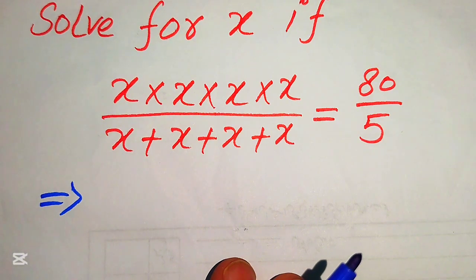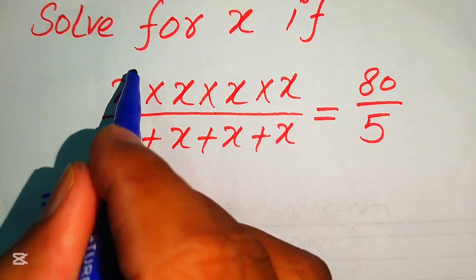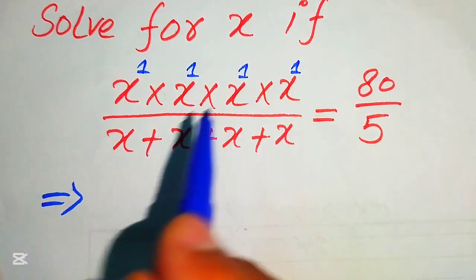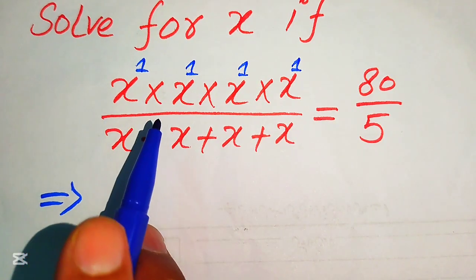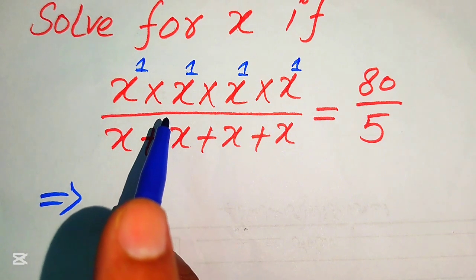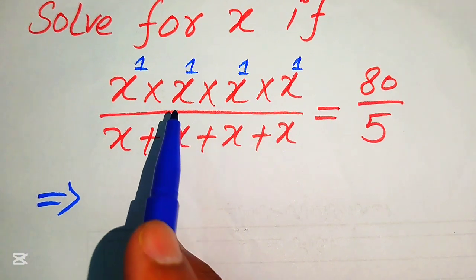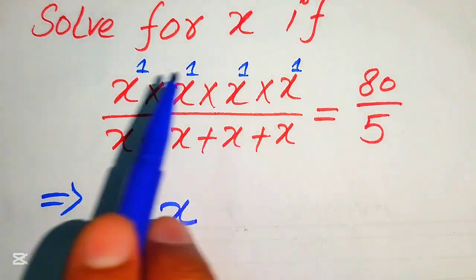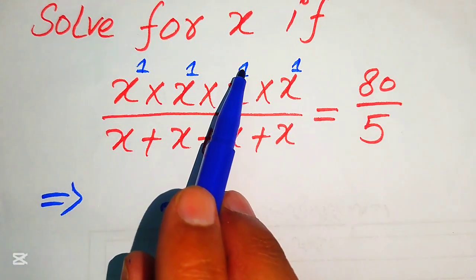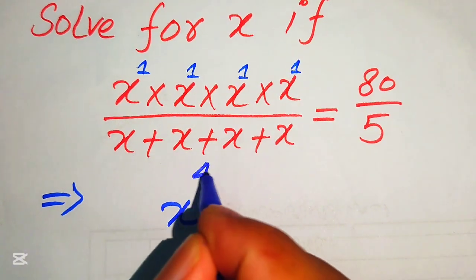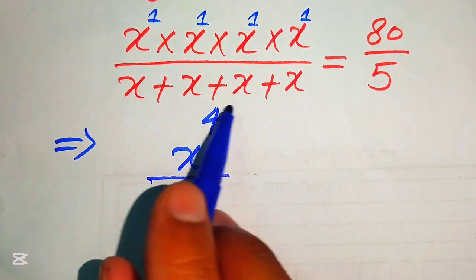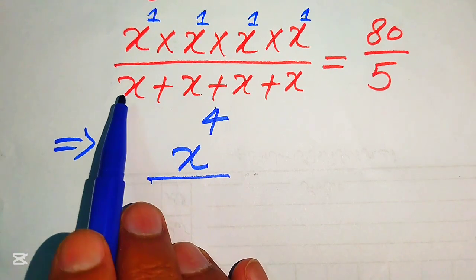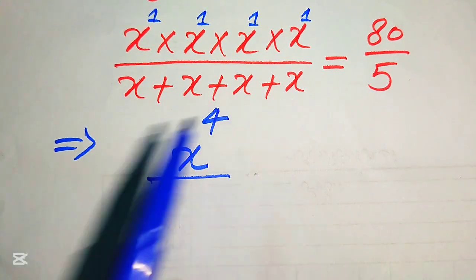So because we solve this problem for the values of x, you see here that the exponent of all of these values is 1. So we apply the exponent law — according to the exponent law, if you have numbers multiplied by each other and their bases are the same, we add the exponents. So you get 1 plus 1 is 2, 2 plus 1 is 3, 3 plus 1 is 4. Similarly, in the denominator, x is added 4 times, which means we add the coefficients of these terms.